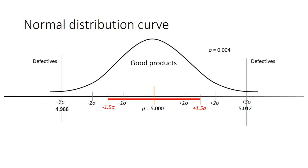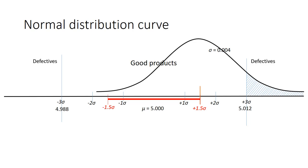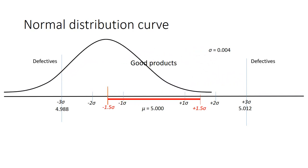Let us consider the extreme cases where the process mean is shifted to plus 1.5 standard deviations. We will have more defective units on the right-hand tail while almost none on the left-hand tail. If the process mean shifts toward minus 1.5 standard deviations, defective units appear only on the left-hand tail and there are none on the right-hand tail, because the right-hand tail remains within the specification limits.